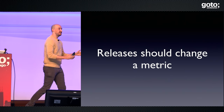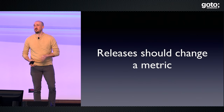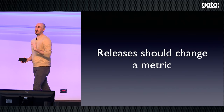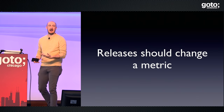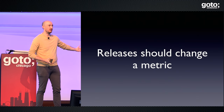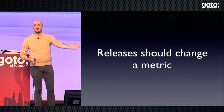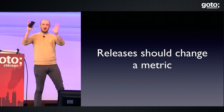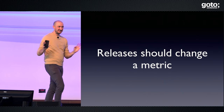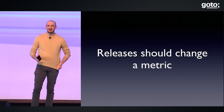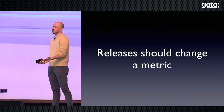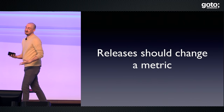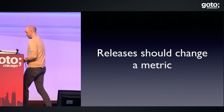Releases should change a metric. Releases are deploys of code plus some other stuff. Every release is a hypothesis about what's going to happen in your system — you've written this code, you believe it will change your systems in certain ways, and that should be expressible as a metric. There are quality-of-life things that are non-quantifiable, but for most of your deploys there is a metric you could look at to see if it went up or down. The more system-level you get, the easier it is to quantify.